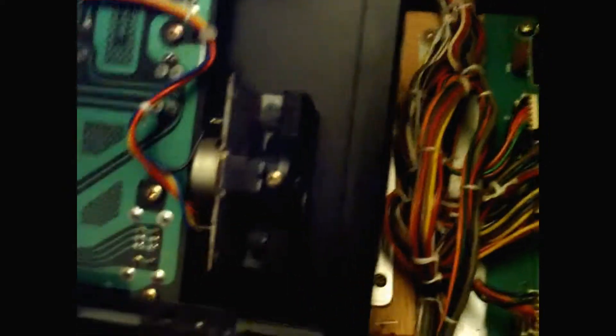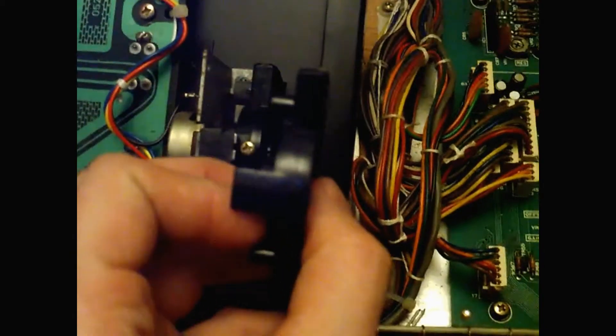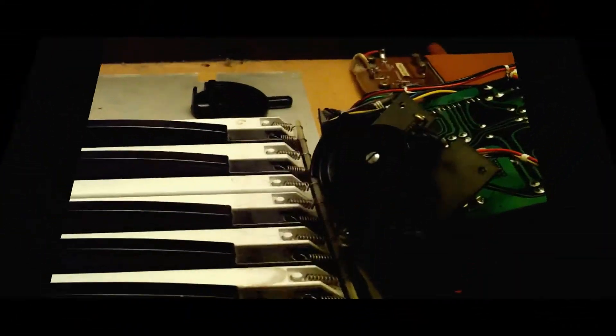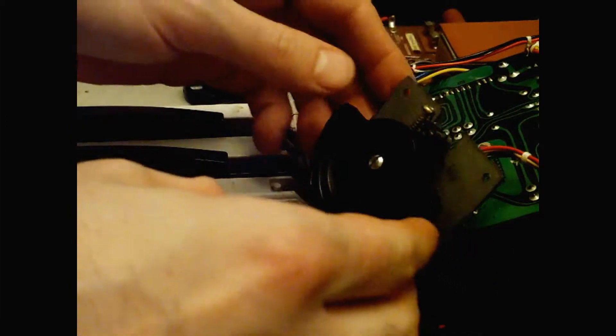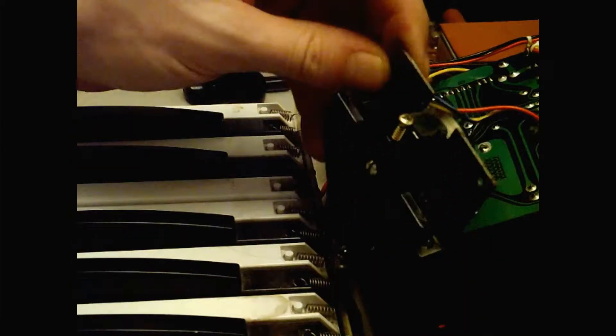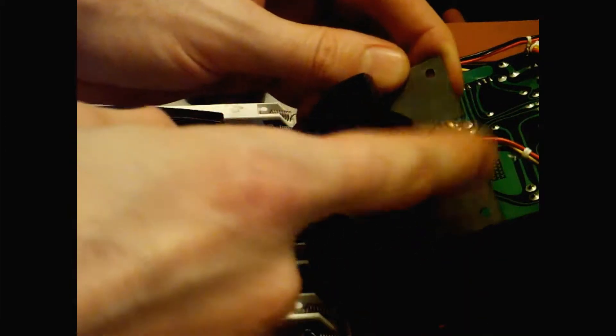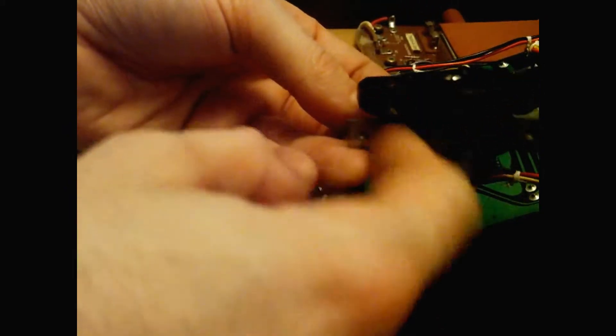And then hopefully get the old plastic bender off and get this one in its place. Okay, so I've got the camera on a tripod now so that we can see exactly what's going on. That is the old bender with the, that's where the top bit should be.